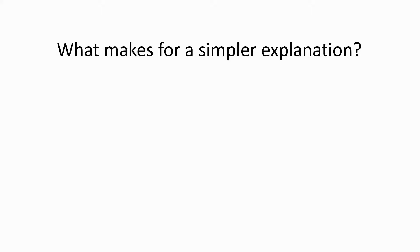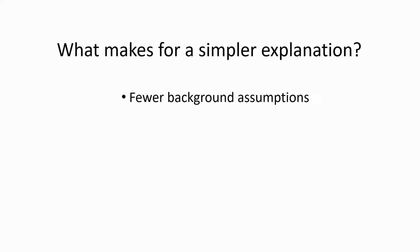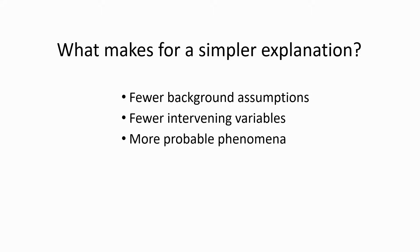What makes for a simpler explanation? It makes fewer background assumptions, it posits fewer intervening variables, it relies on more probable phenomena, and it has less reliance on coincidence for its explanatory power.